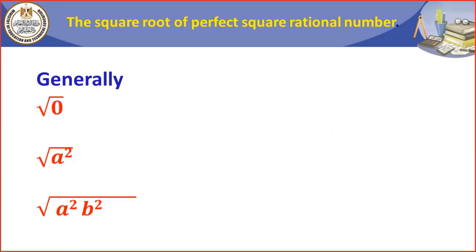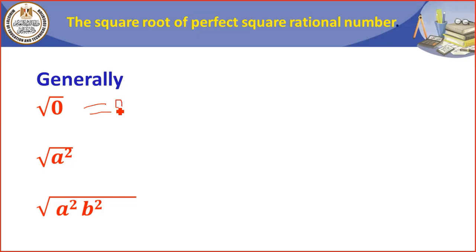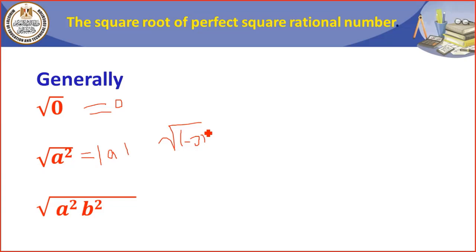An important point: root zero equals zero. This can appear in multiple-choice or fill-in-the-blank questions. Also, root A power two equals the absolute value of A. For example, the square root of (negative 3) all power 2 equals the absolute value of negative 3. The absolute value always preserves the value of the number as positive.